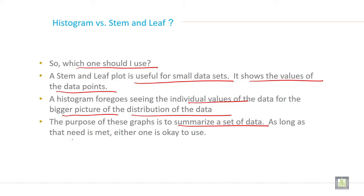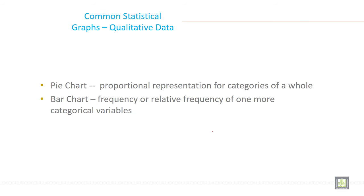The purpose of this graph is to summarize a set of data. As long as that need is met, either one is okay to use. Common statistical graphs: pie chart, proportional representation for categories of a whole, and bar chart, frequency or relative frequency of one or more categorical variables.